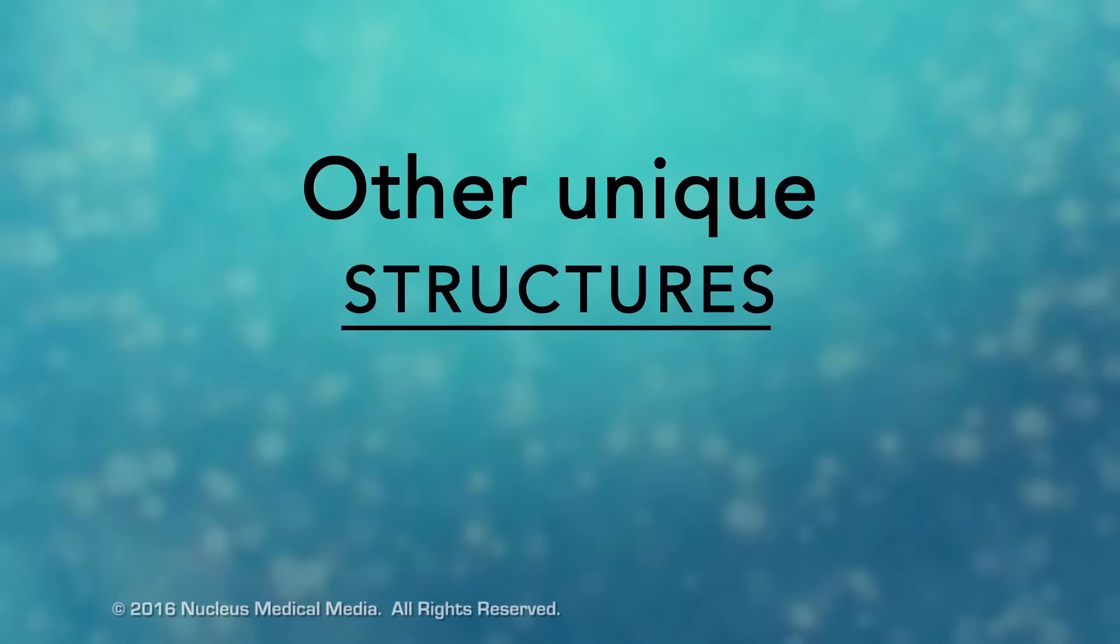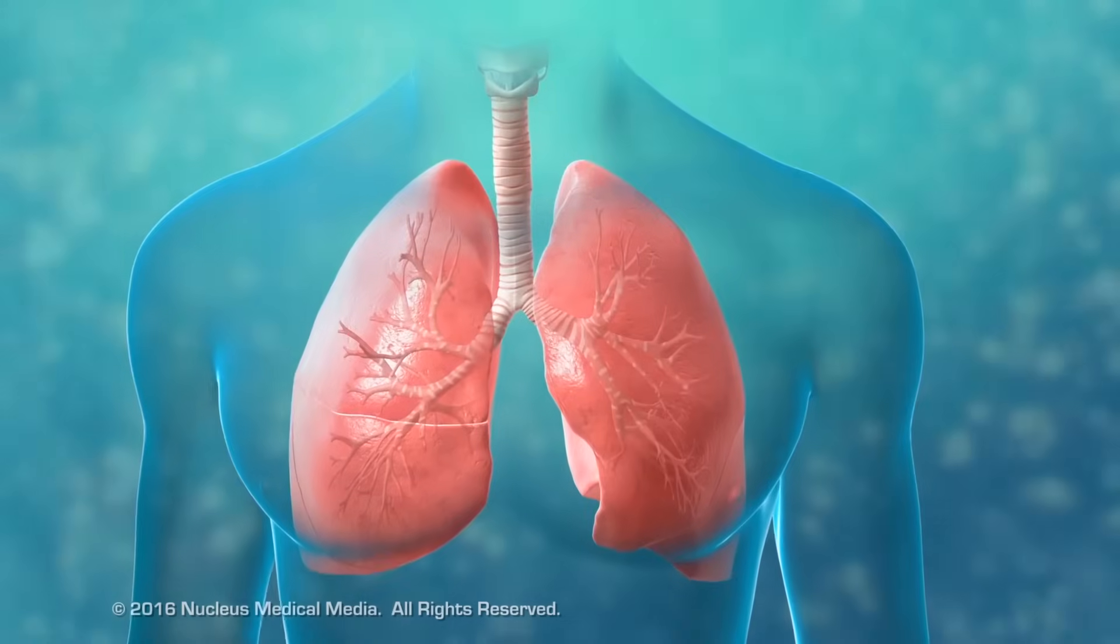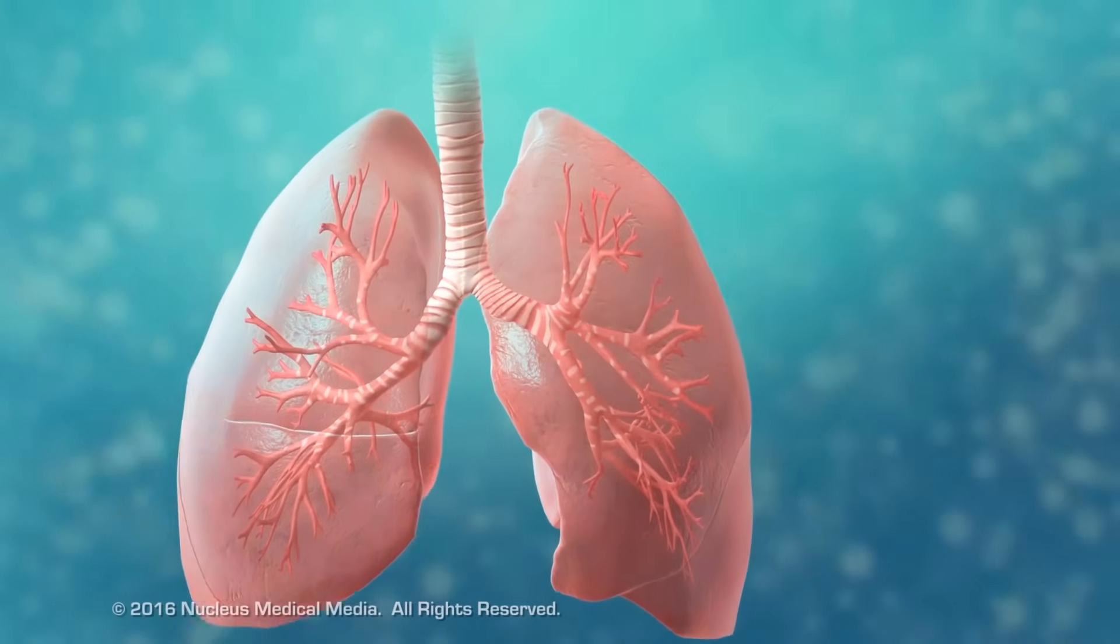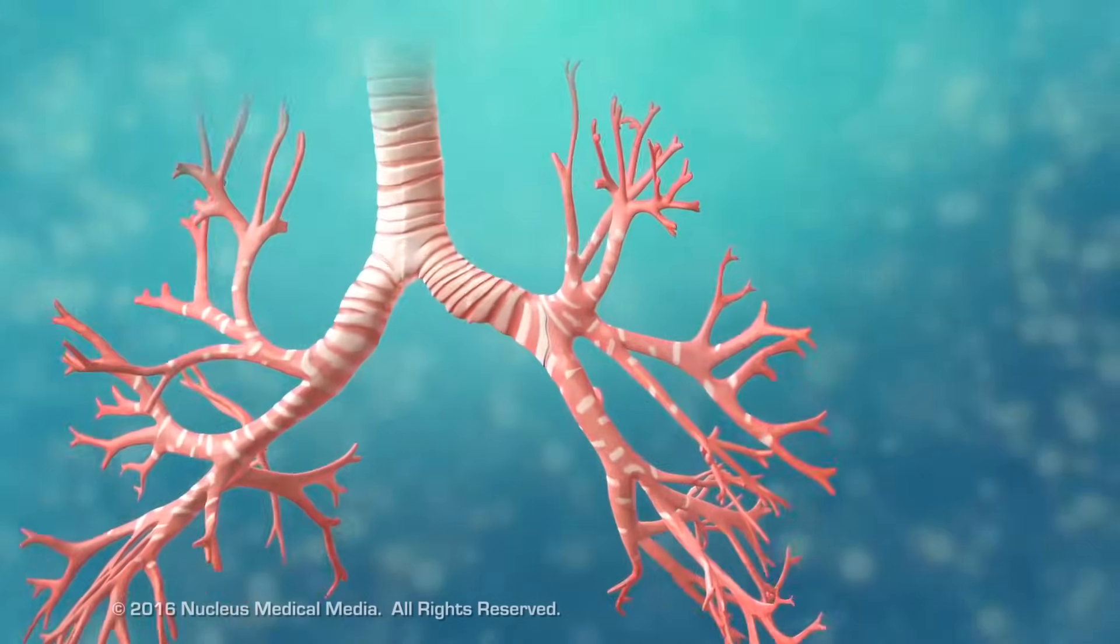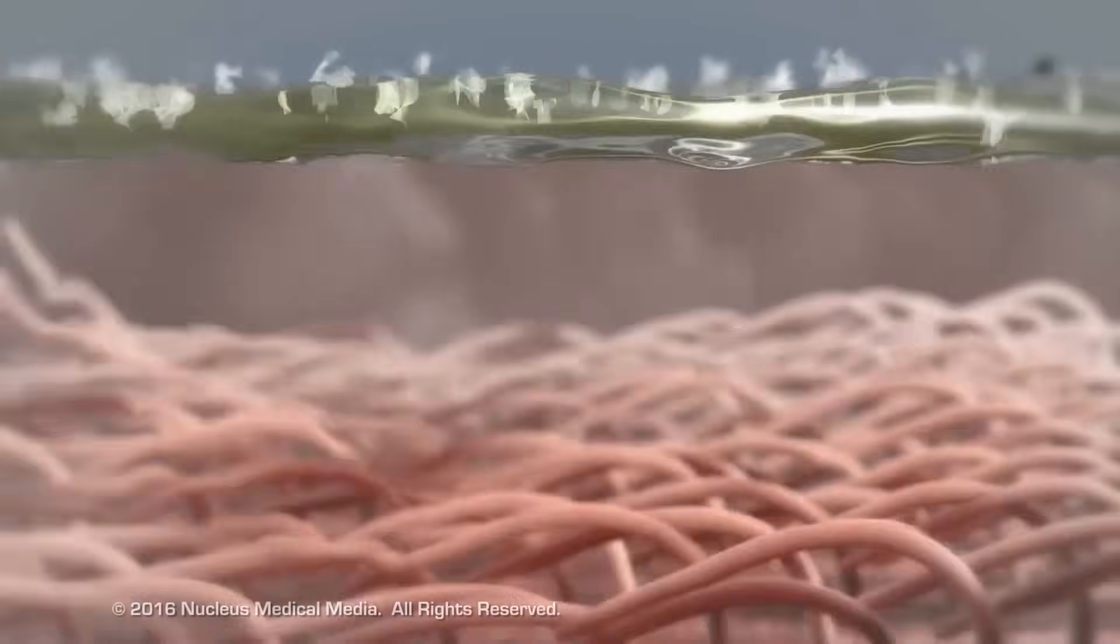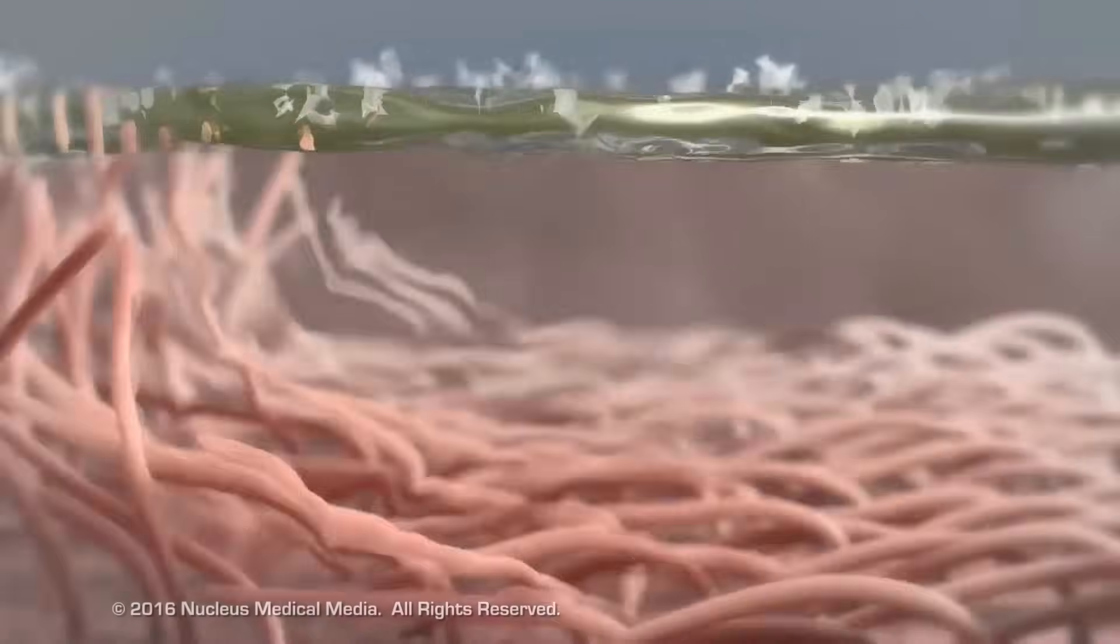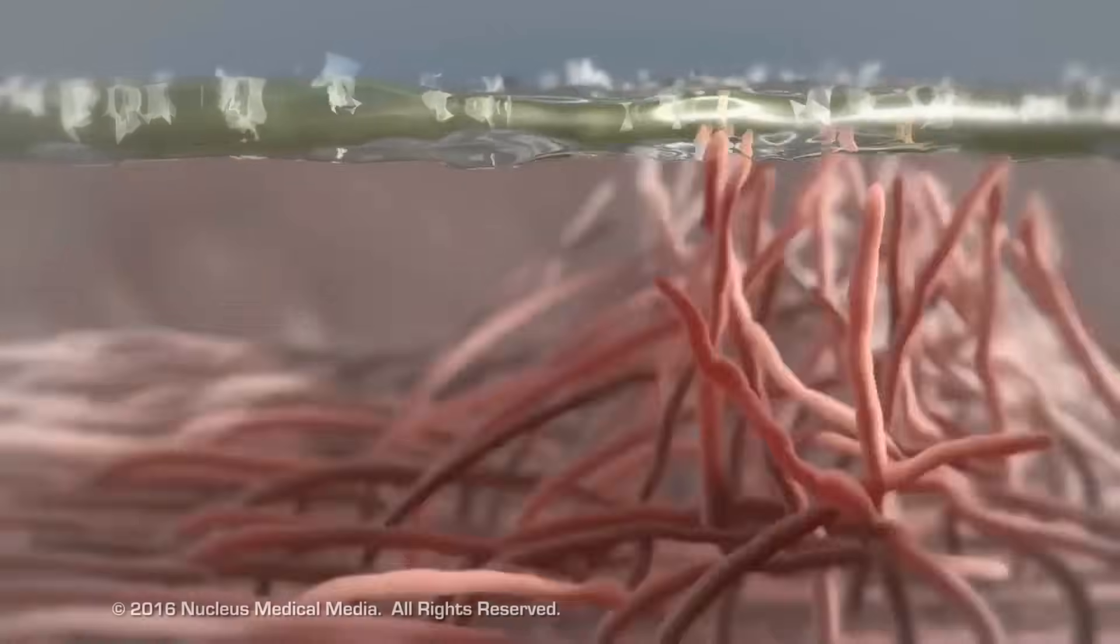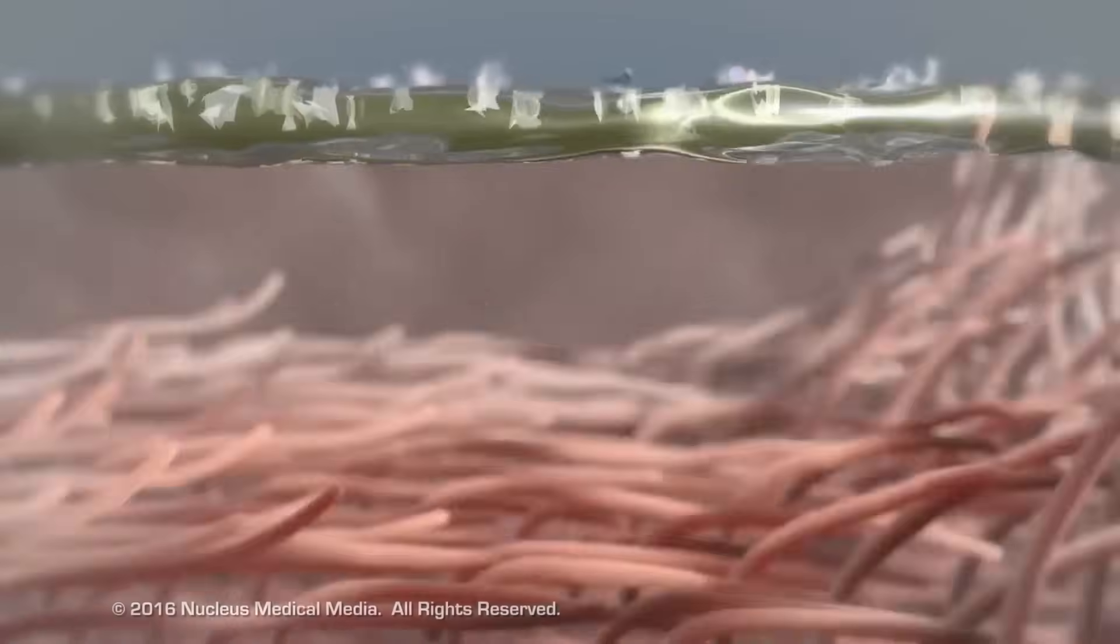There are many other unique structures that only some cells have. Here are just a few. In humans, for example, the respiratory tract is lined with cells that have cilia. These are microscopic, hair-like projections that can move in waves. This feature helps trap inhaled particles in the air and expels them when you cough.